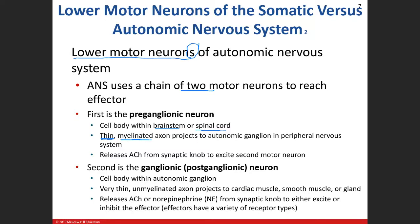The preganglionic neuron goes to some sort of ganglion in the peripheral nervous system — we refer to these as autonomic ganglia. A ganglion is a cluster of cell bodies. Usually where you see clustering of cell bodies is where you see synapses — other neurons come in and connect. A cluster of cell bodies in the central nervous system is called a nucleus; in the peripheral nervous system, it's a ganglion.